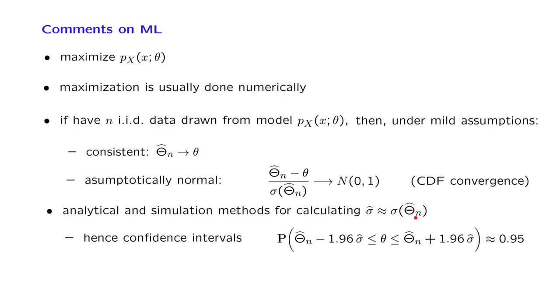Once you have an estimate or an approximation of this standard error in your hands, you can further use it to construct confidence intervals. Using the asymptotic normality, then we can construct the confidence interval in exactly the same way as we did for the case of the sample mean estimator. And this, for example, would be a 95% confidence interval.